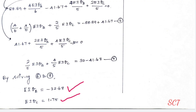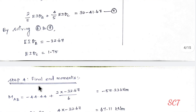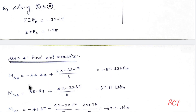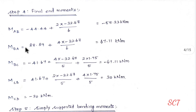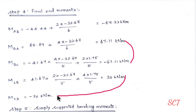Now we substitute these values back into the slope deflection equations. Final end moment M_AB = minus 44.44, substituting EI·θ_B divided by 6. Substituting EI·θ_B and EI·θ_C into all equations to get M_AB, M_BA, M_BC, M_CB, and M_CD. Note: clockwise is positive, anti-clockwise is negative.